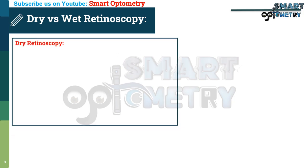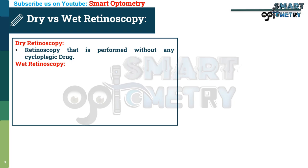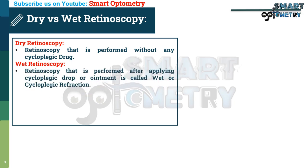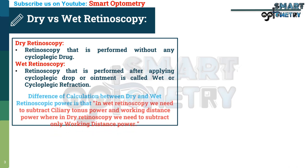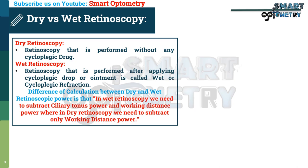Dry versus wet retinoscopy. Dry retinoscopy is retinoscopy performed without any cycloplegic drug. Wet retinoscopy is retinoscopy performed after applying a cycloplegic drug, drop or ointment, and is called wet or cycloplegic refraction. The difference in calculation is that in wet retinoscopy we subtract both ciliary tonus power and working distance power, whereas in dry retinoscopy we subtract only working distance power.